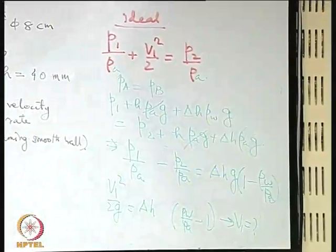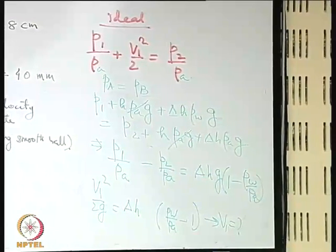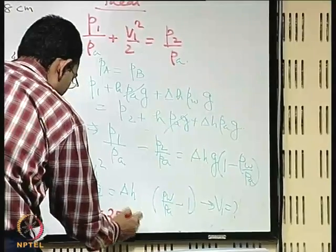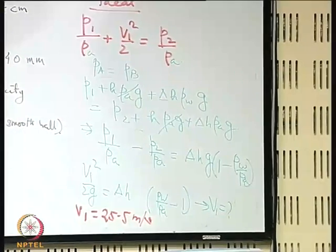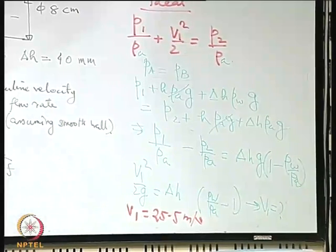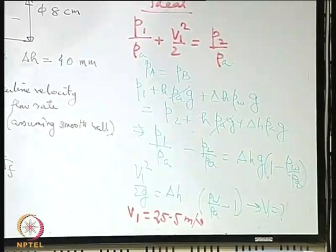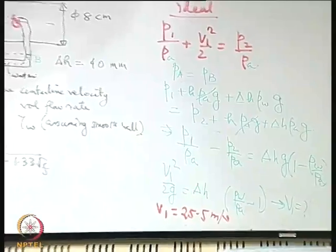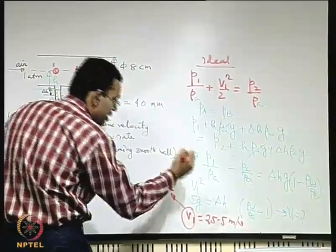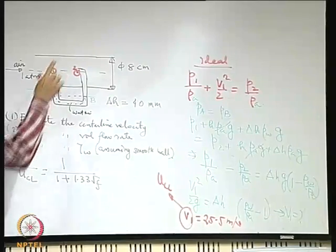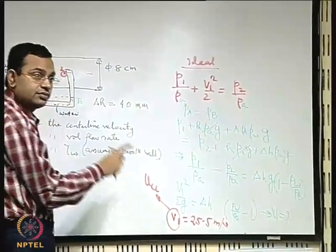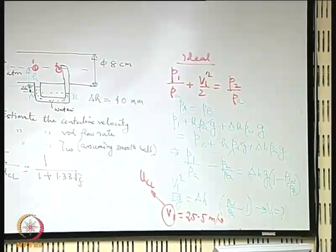From this idealized analysis, the centerline velocity v1 is found to be 25.5 meters per second. This is the velocity at a point — specifically at the centerline — so it is the centerline velocity. It emerges from Bernoulli's equation applied between two points, so we are talking about a point velocity, not the average velocity over a cross-section.